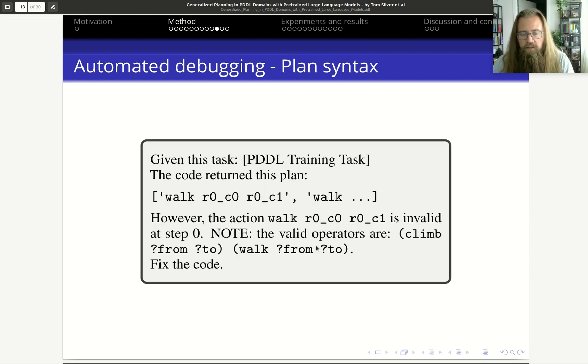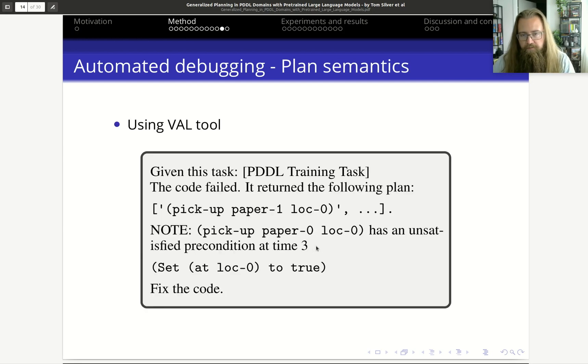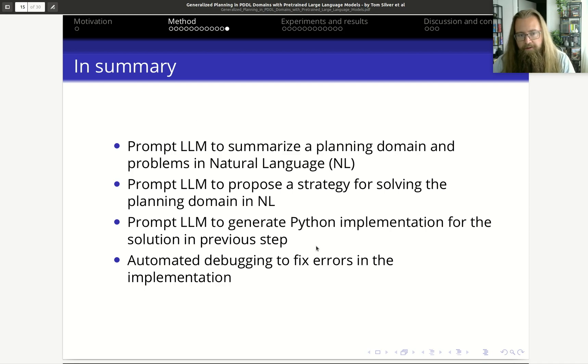Then we have the failure of the actual output that the code produces. In this case, it would be like the plan syntax is incorrect. Finally, they also check if the semantics of the plan is correct, and they use a separate tool called VAL, which is a tool that is used to validate plans. In summary, they have these four steps: they prompt the LLM to summarize a planning domain in natural language, then propose a strategy from this domain also in natural language, then prompt to generate the actual program, the actual code, and then automated debugging is used to fix the errors of the implementation.